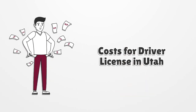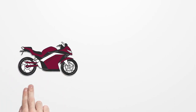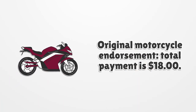Costs for Driver License in Utah: Class D License total payment is $52. Class D Provisional License total payment is $39. Original Motorcycle Endorsement total payment is $18.